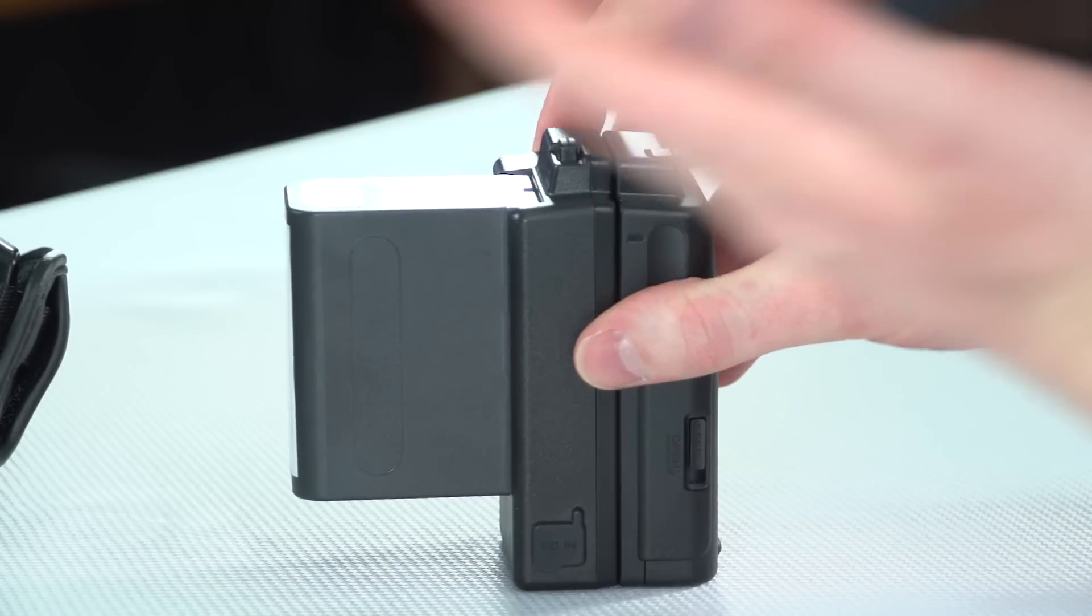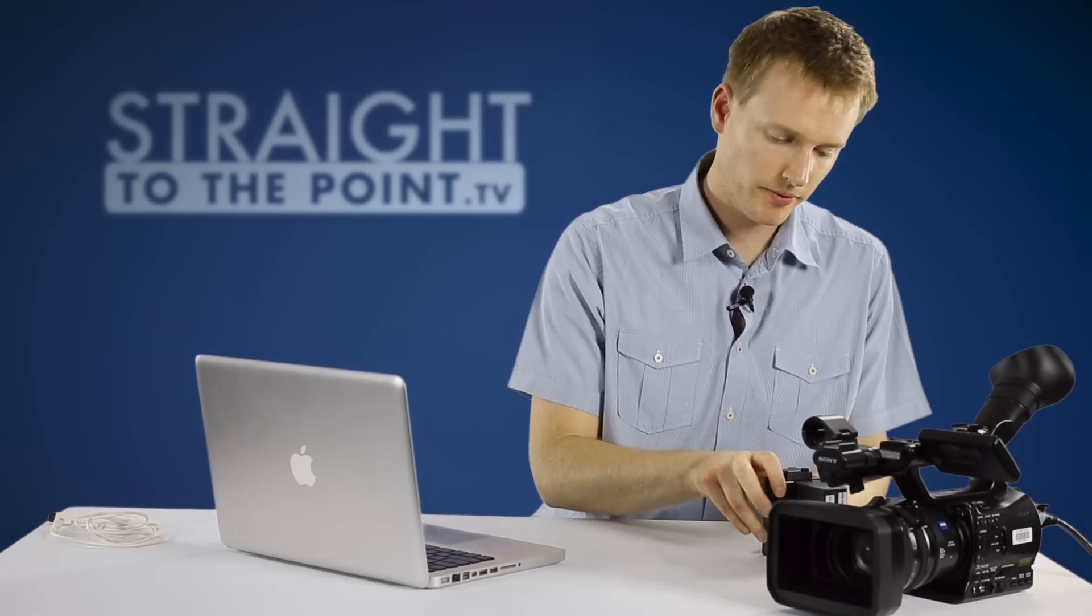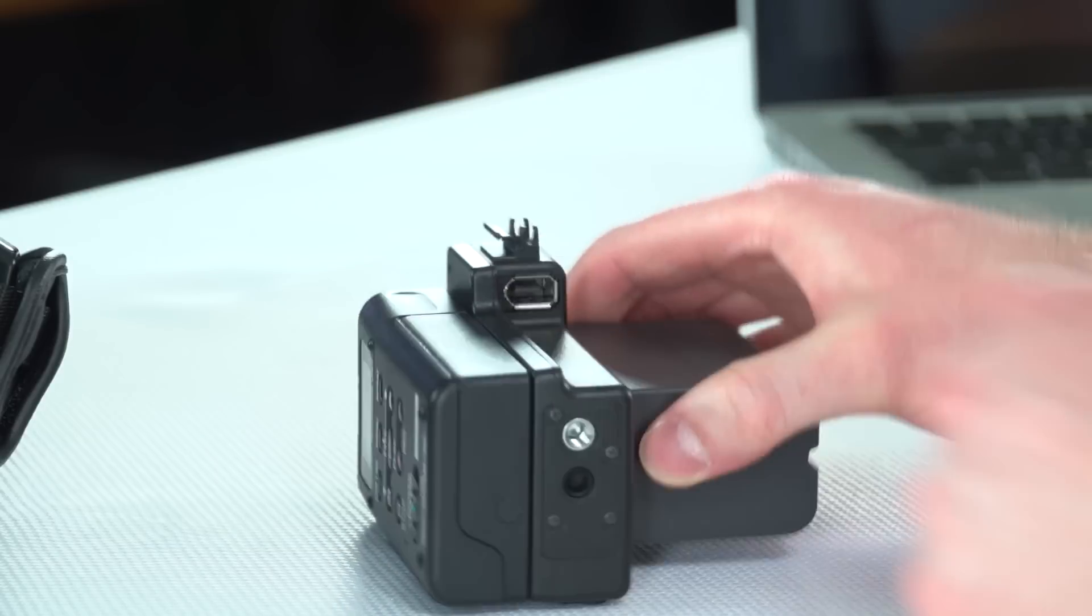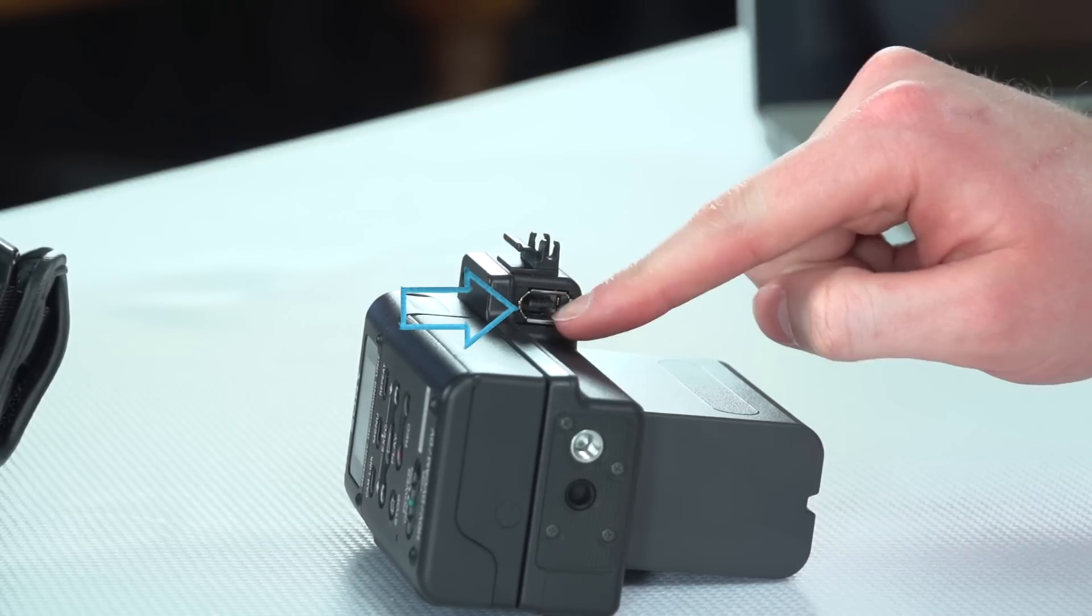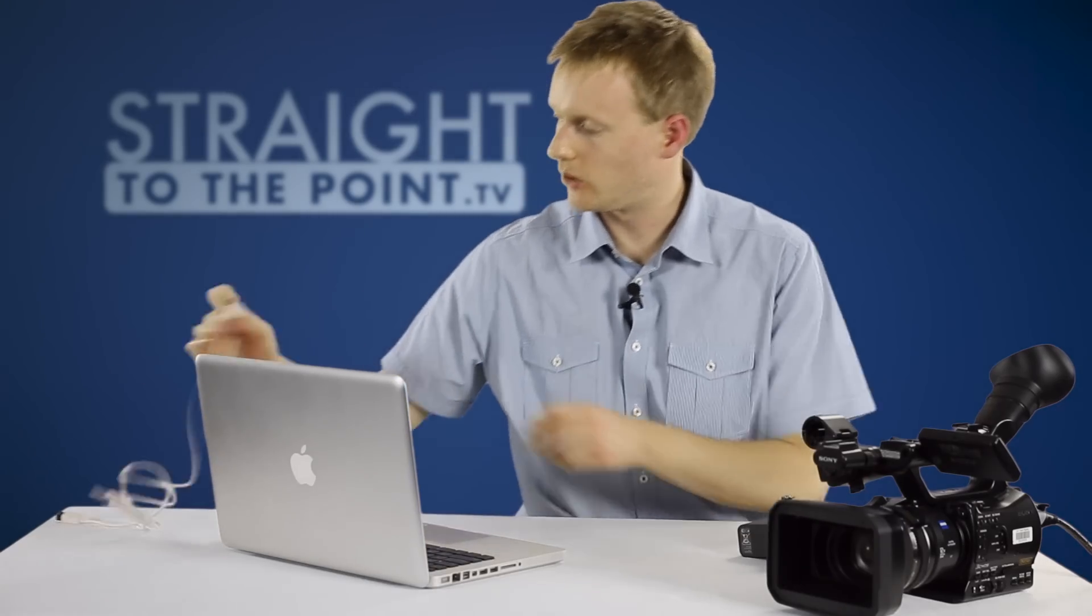There we go. That mounts on like so. It looks a little bit strange to be honest, but that's what we're meant to do. And then we'll connect that FireWire to the little 6-pin FireWire port.